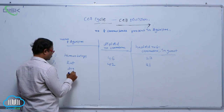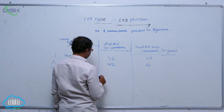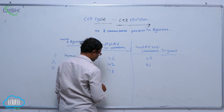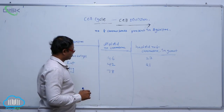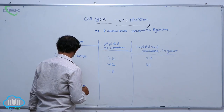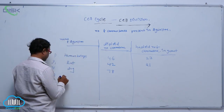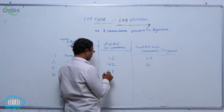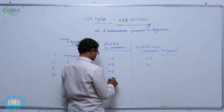After that, dog. The diploid number of chromosomes is 78. After that, cat. The diploid number of chromosomes is 38.